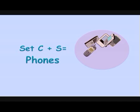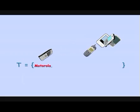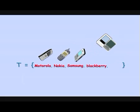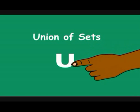So, we have a common characteristic. That common characteristic is the phone. The set T, when we have joined or united the two sets together, has as its members Motorola, Nokia, Samsung, Blackberry, and iPhone. Let's look at the symbol we are putting up here on our board — that means union.